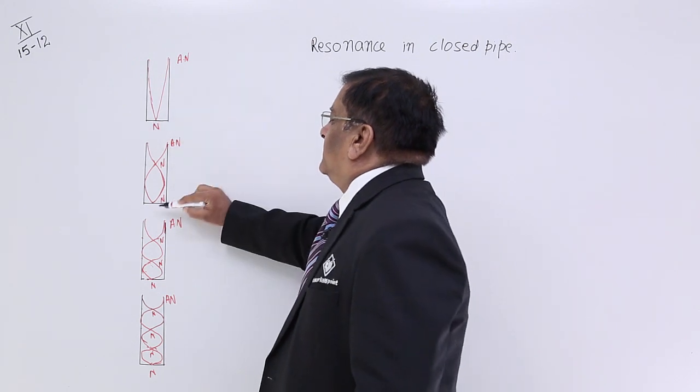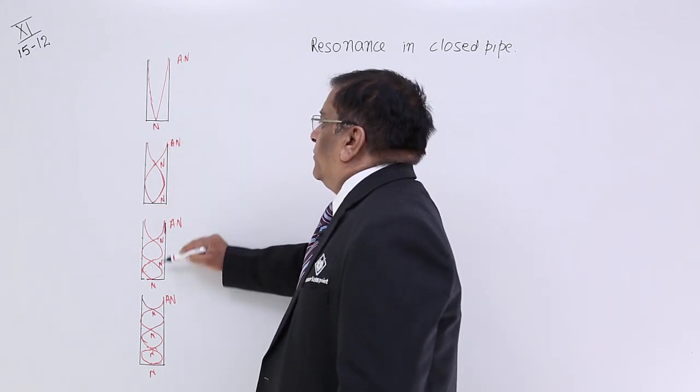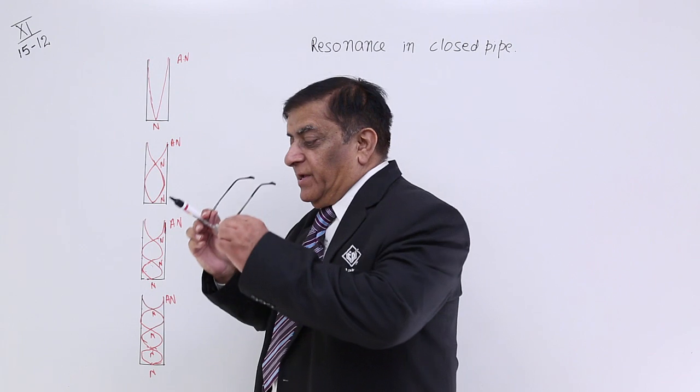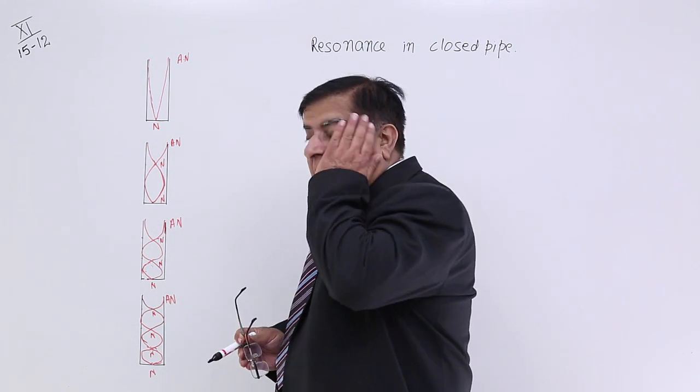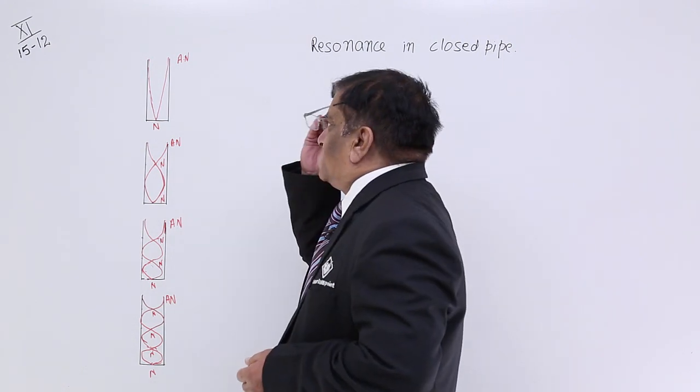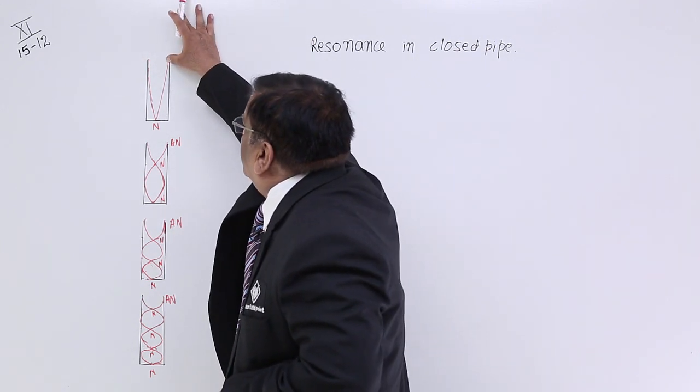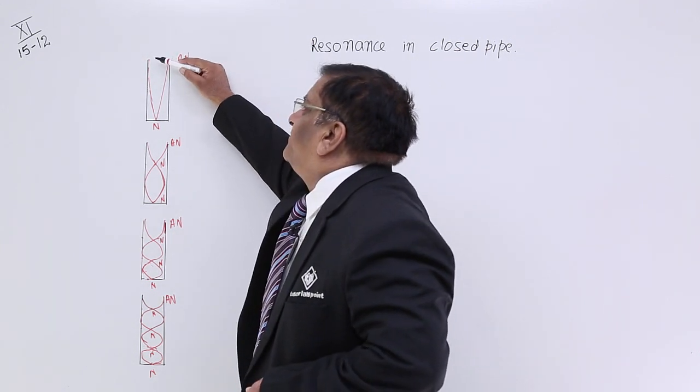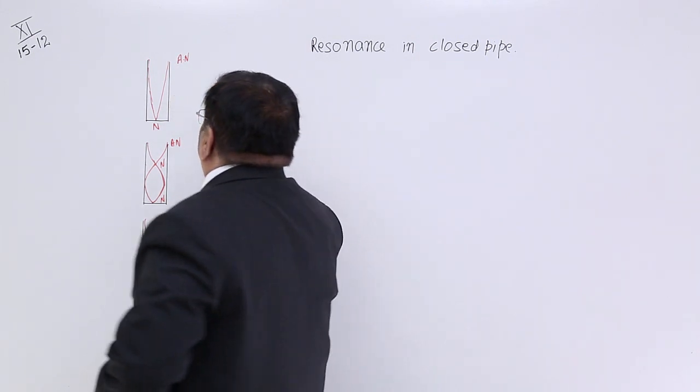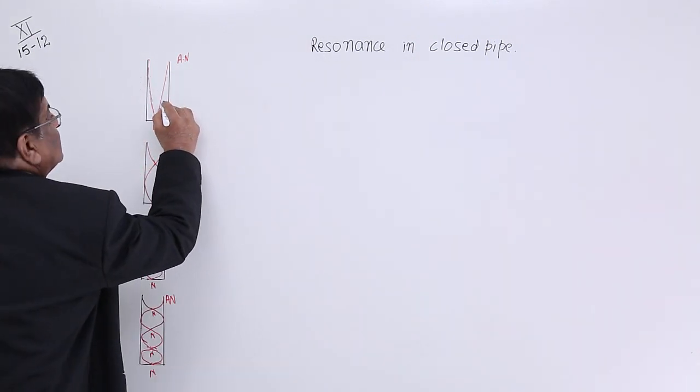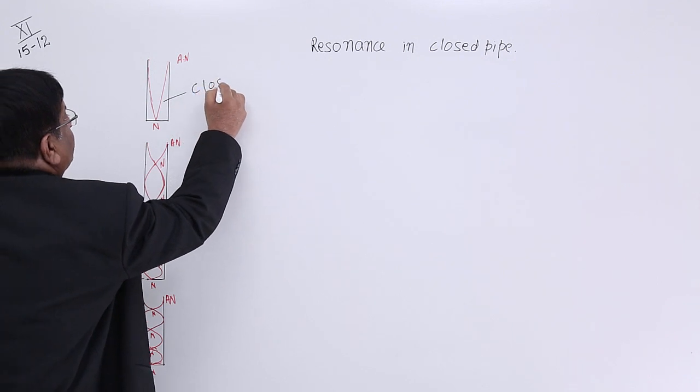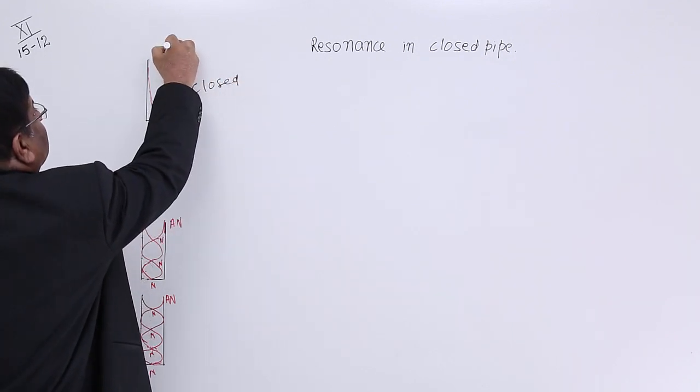This is the closed end. So one end is closed, one end is open. In this what happens? Where are the reflections? The reflections are from this boundary. This is a closed chamber. This is closed. And this is open.